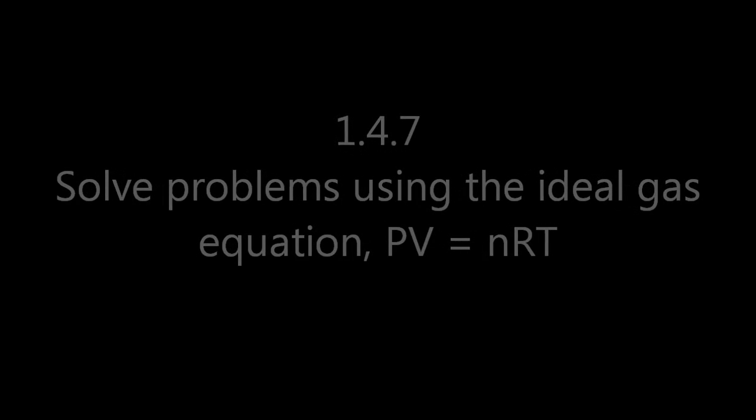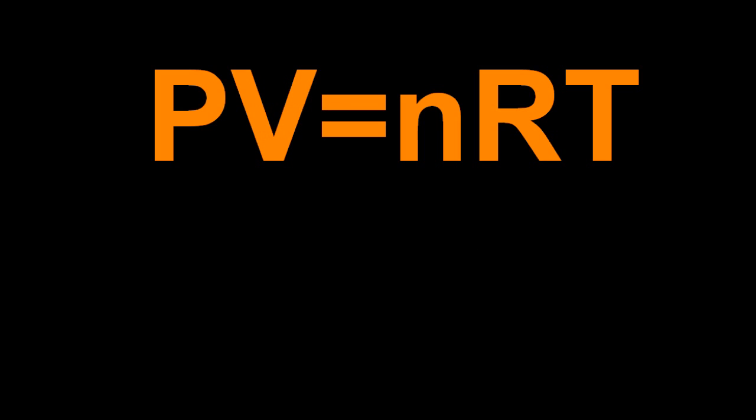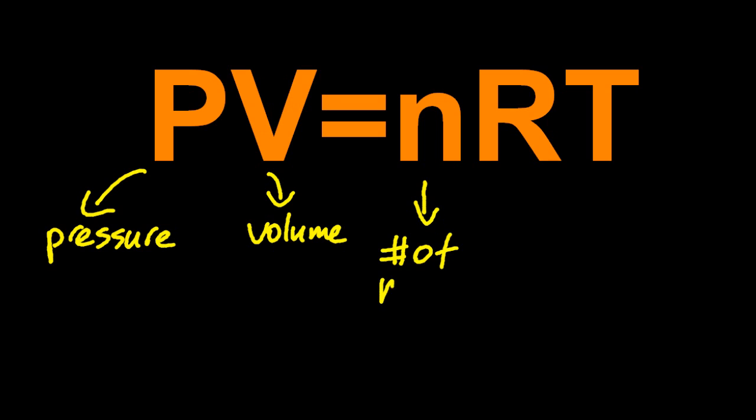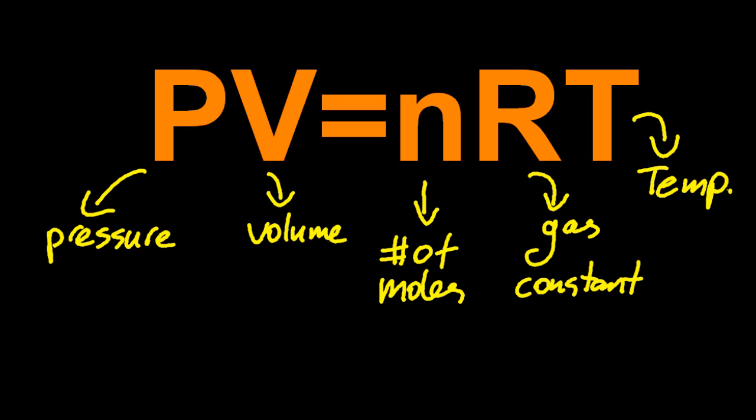PV equals nRT. P is pressure, V is volume, n is the number of moles. RT isn't Richard Thornley, that's me. R is the gas constant and T is the temperature.